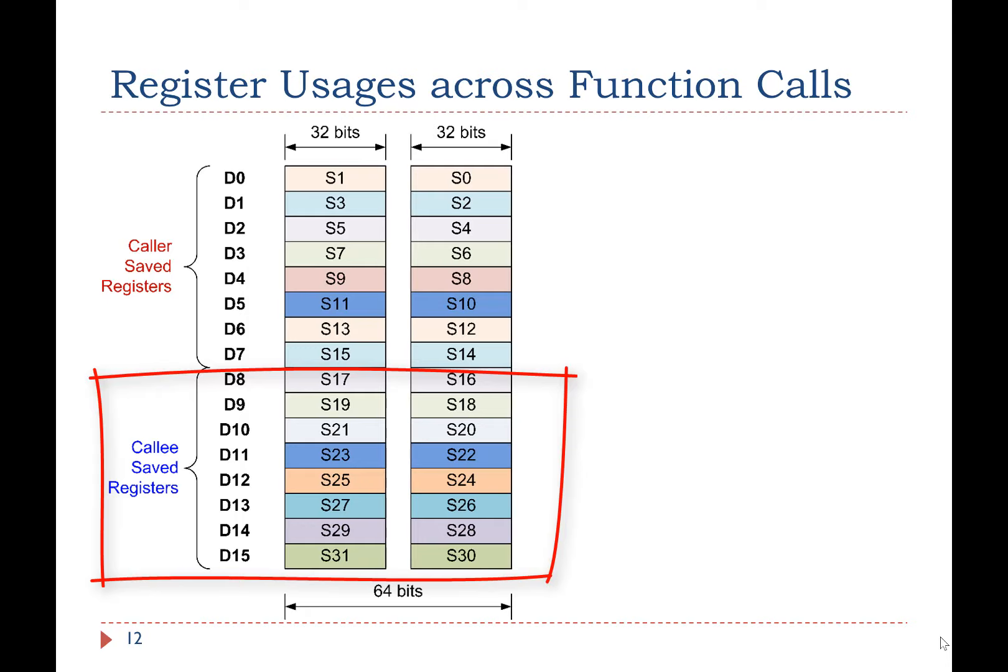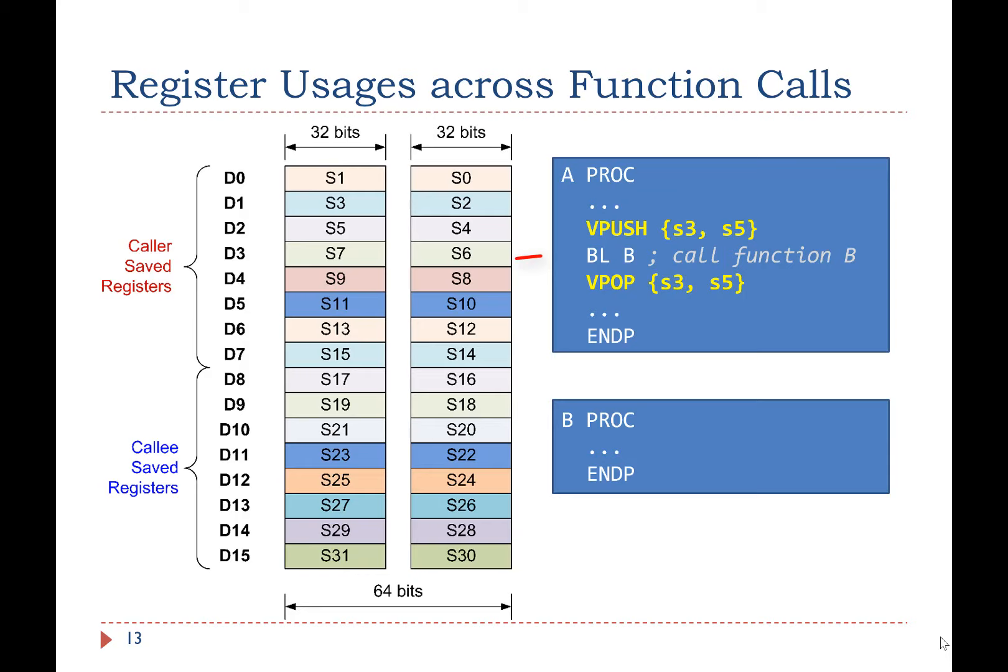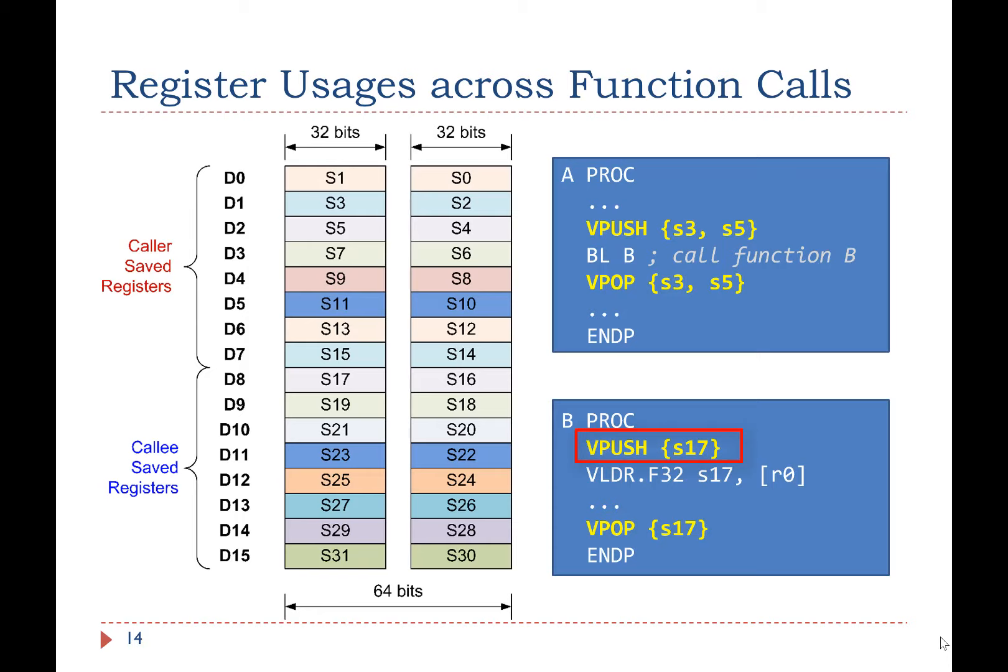For example, suppose function A calls function B. If the caller A expects the values of registers S3 and S5 are not modified by the callee B, then the caller A should push S3 and S5 onto the stack before calling B, and also pop them off the stack to restore their original values immediately after B returns. In addition, if the callee B needs to write to register S17, B should push S17 onto the stack at the very beginning of the function and pop it off the stack at the end. The caller A has such expectation that calling a function does not influence the value of any register from S16 to S31.